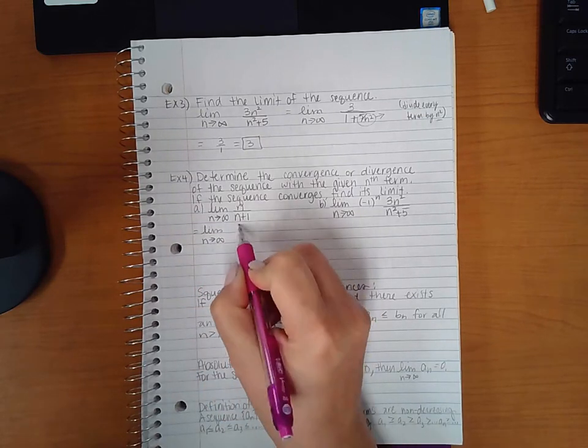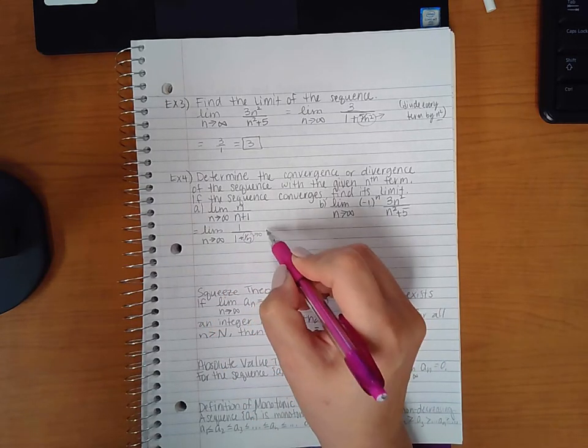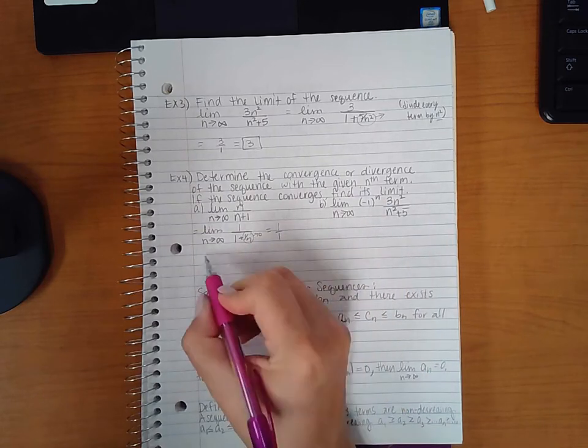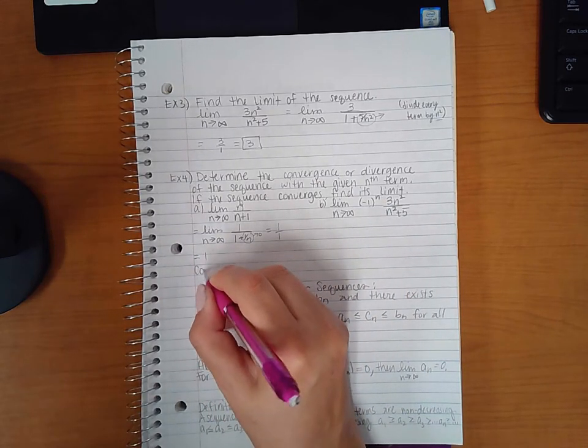So I get one over one plus one over n and the same thing happens, this guy goes to zero so I end up with one over one which is one. Now this is a real number so I'm going to say it converges, and more, it converges to one.